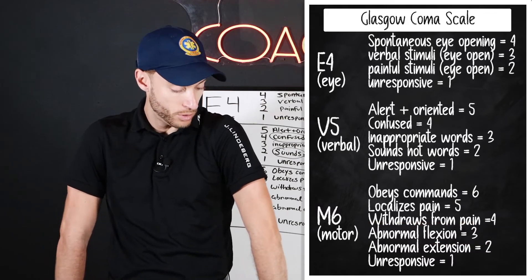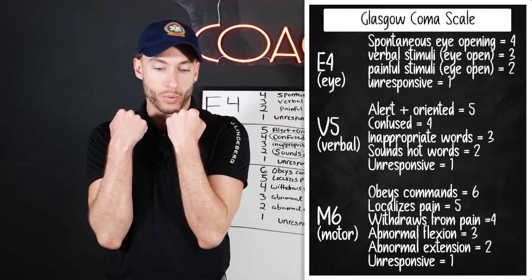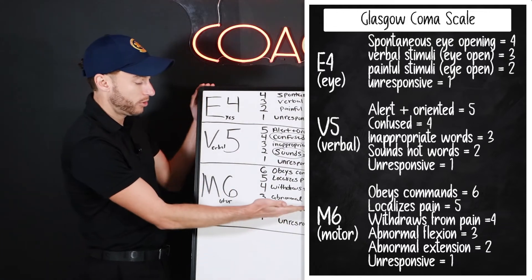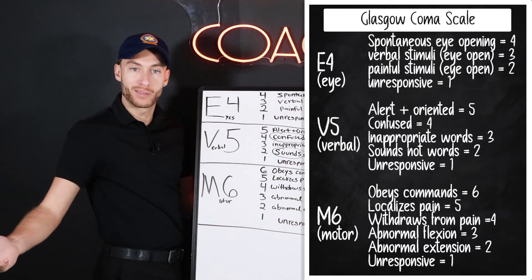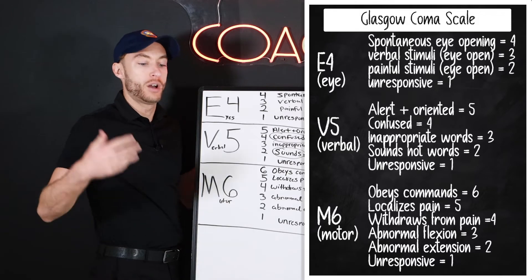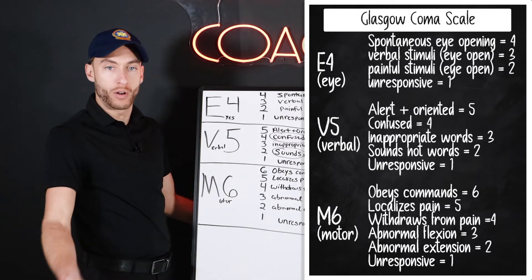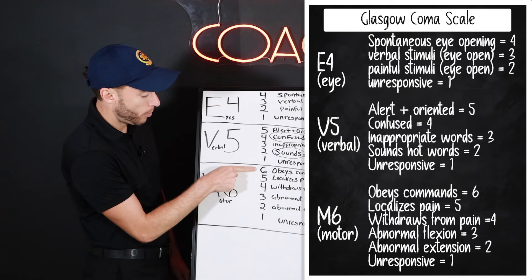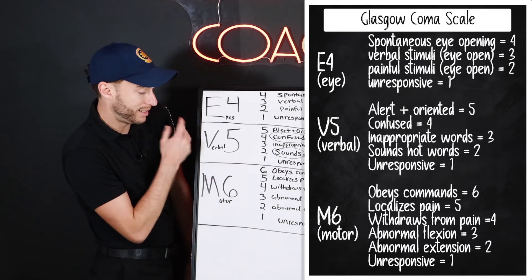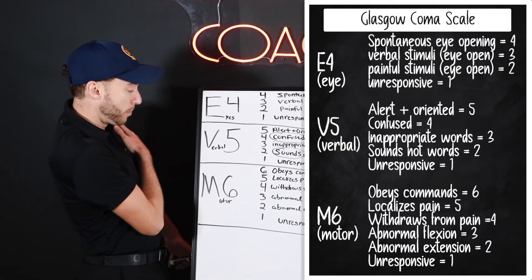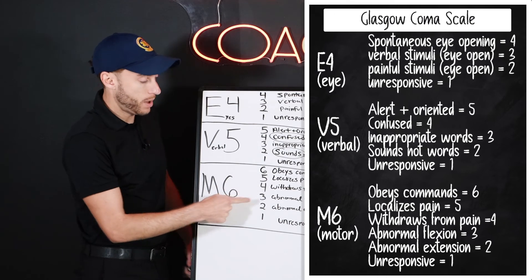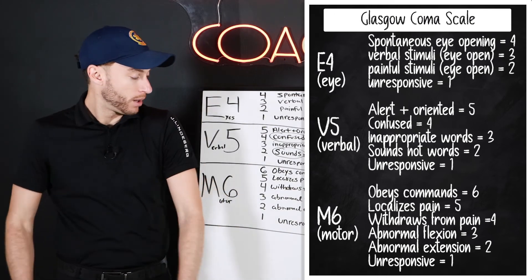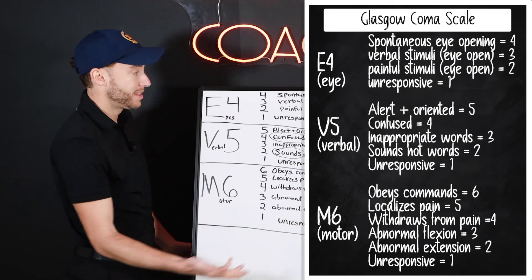So for the motor scale we go: six obeying commands, five localizes pain, four withdraws from pain, three decorticate posturing, two decerebrate posturing, and one unresponsive. Think of a classic cardiac arrest patient at the bottom of that scale.